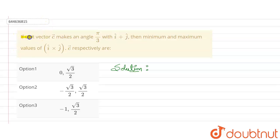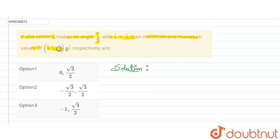Hello everyone. In this question it is given that a unit vector c makes an angle π/3 with î + ĵ. We need to find the minimum and maximum value of the expression (î × ĵ) · c. Four options are given, so let's start.